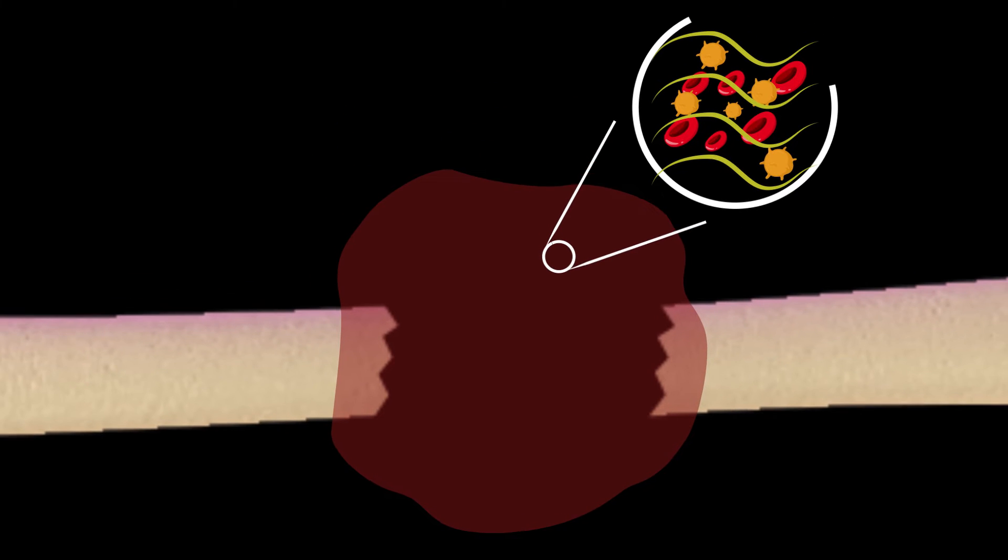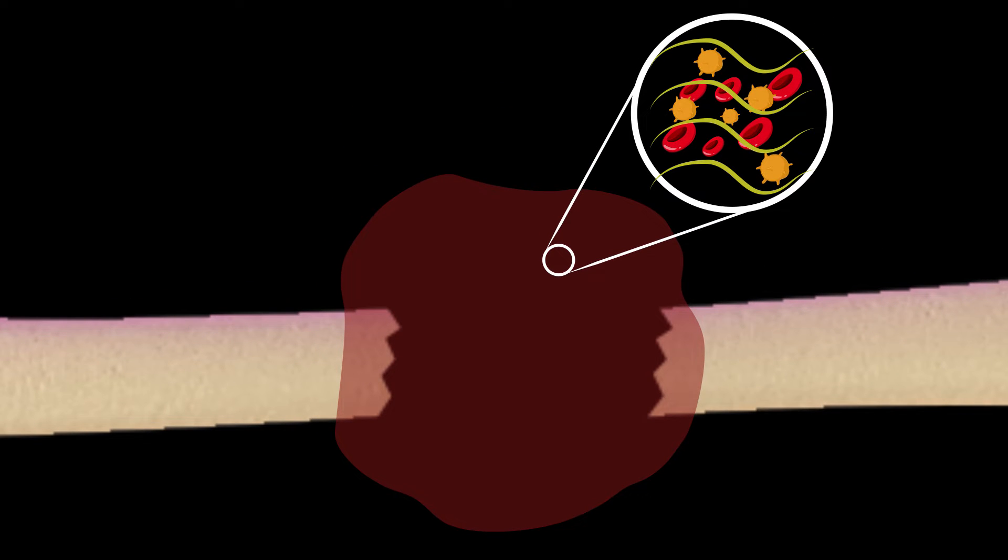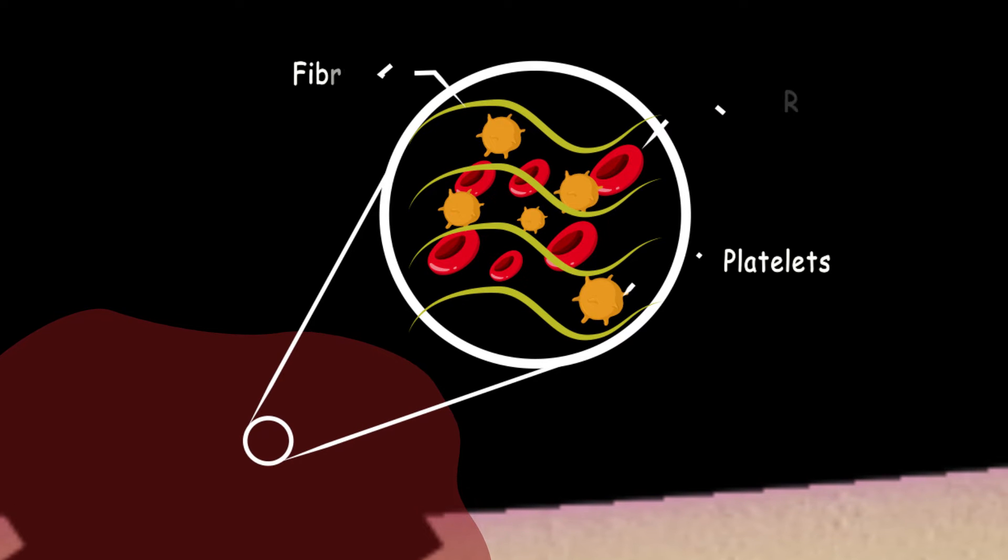The process is similar to other tissue repair systems which start with bleeding and coagulation. The coagulation happens with the help of platelets and fibrin proteins to stop the bleeding and it acts as the provisional extracellular matrix.